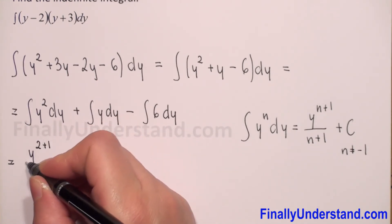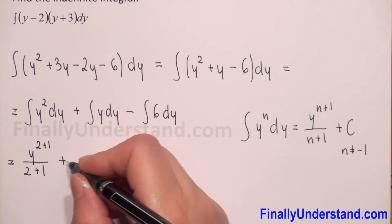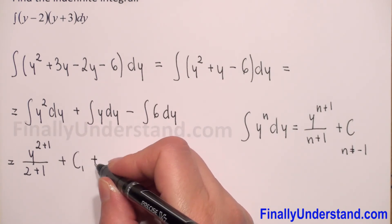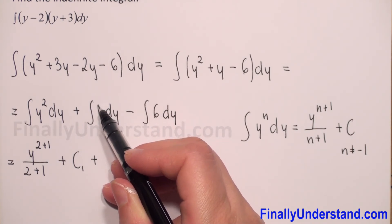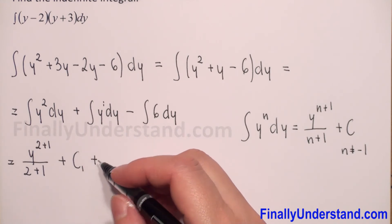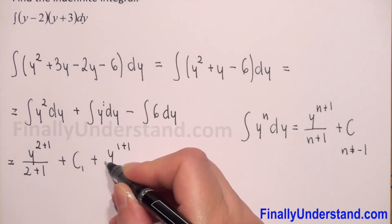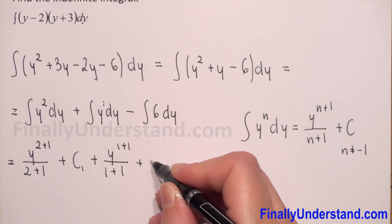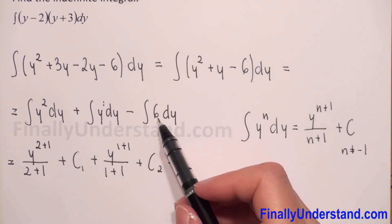In the first integral, n is equal to 2, so this is equal to y to the power 2 plus 1, over 2 plus 1, plus constant C1. For the next integral, y has a power of 1 — when there is no written power it is always an invisible 1 — so we have y to the power 1 plus 1, over 1 plus 1, plus constant C2.